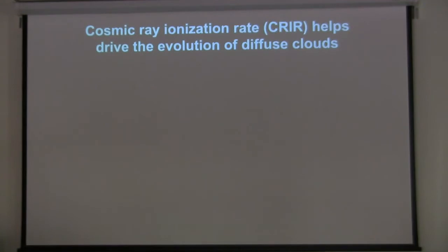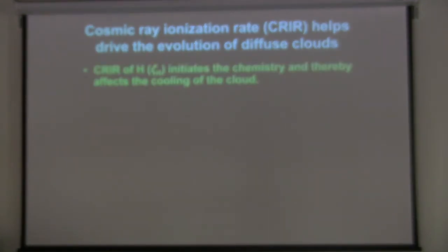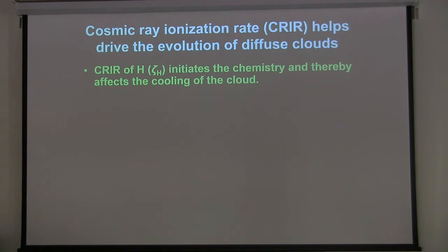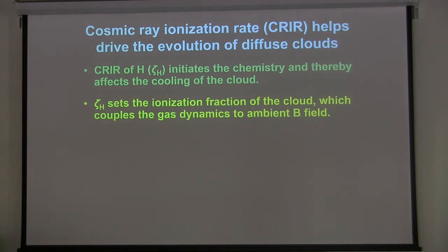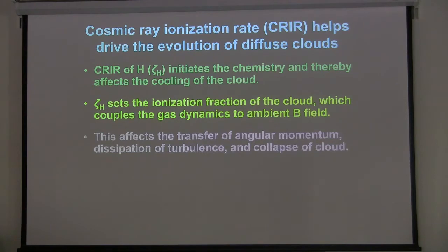Naively we would think it's ultraviolet light from stars that ionizes the gas, but the abundant atomic hydrogen in the interstellar medium absorbs all photons with energies greater than 13.6 eV. Carbon has an ionization potential of about 10.6 eV, so most neutral carbon is thought to be in the form of C+ because of the interstellar radiation field. Oxygen has an ionization potential higher than 13.6 eV, so it's neutral. The ionization is done by relativistic particles — cosmic rays — believed to be accelerated in supernovae and other energetic events.